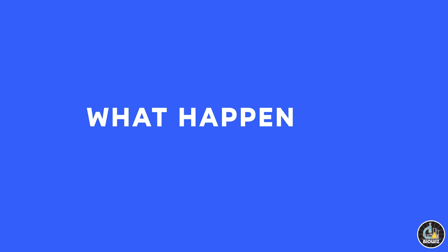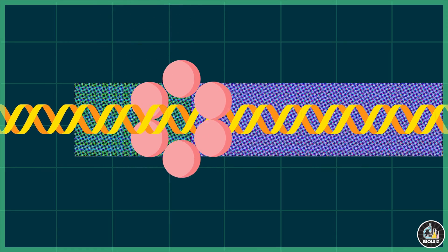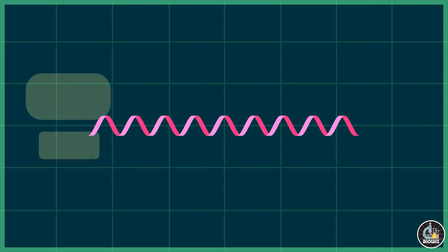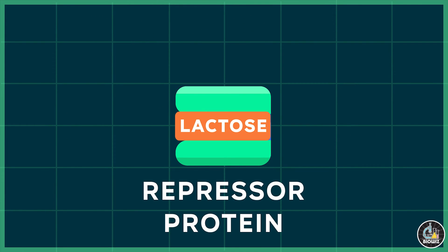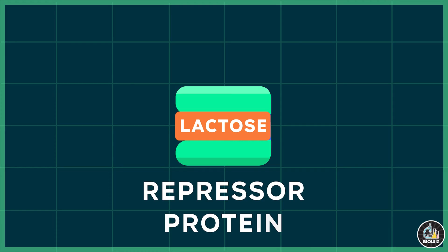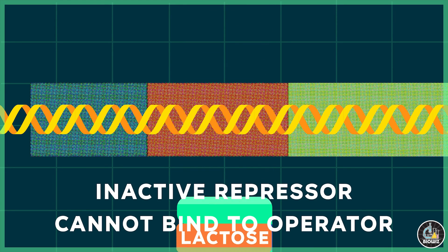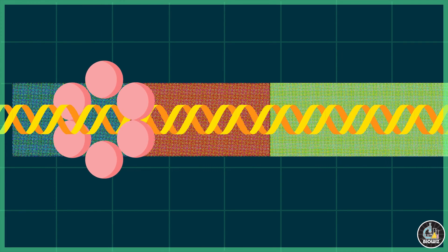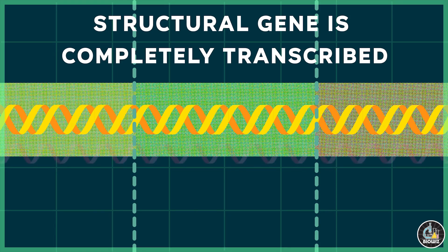What happens when lactose is present? In the presence of lactose, the repressor protein is still continuously synthesized by the regulatory gene. But lactose molecules bind to the repressor protein, causing its inactivation. The inactive repressor cannot bind to the operator region due to a decrease in its binding affinity. The RNA polymerase binding to the promoter of the structural gene can now transcribe it completely, resulting in the formation of a single polycistronic mRNA carrying information of all three structural genes.